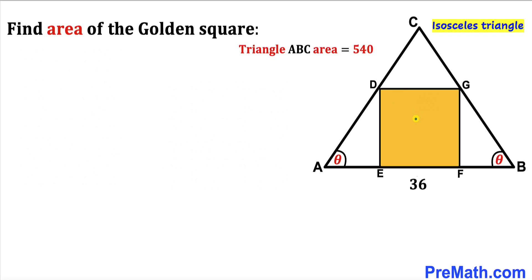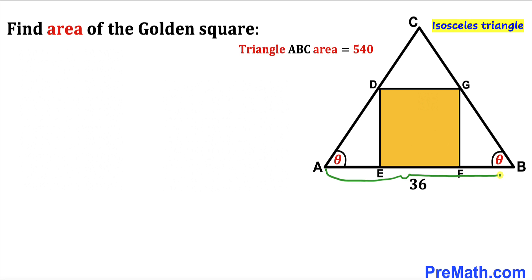Welcome to pre-math. In this video we have a golden square DEFG fully inscribed in a triangle ABC. This triangle ABC is an isosceles triangle since angle theta equals angle theta. The area of triangle ABC is 540 square units, and the length AB is 36 units. Our task is to calculate the area of the golden square DEFG.